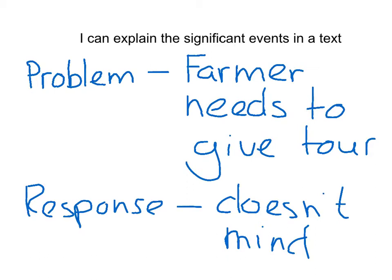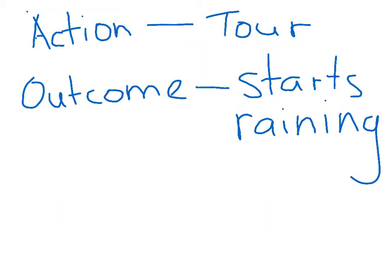This is a screencast about how to explain the significant events in a text. We first read the story about the farmer who needed to give a tour to some people on his farm. That was the problem story. His response was he didn't mind doing it. Then the action was he gave them a tour, and the outcome was that it had started to rain.